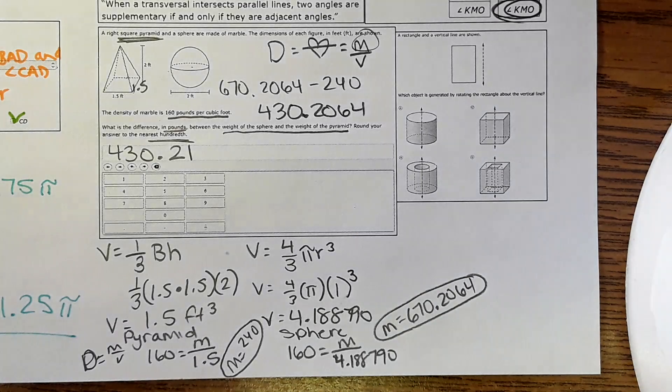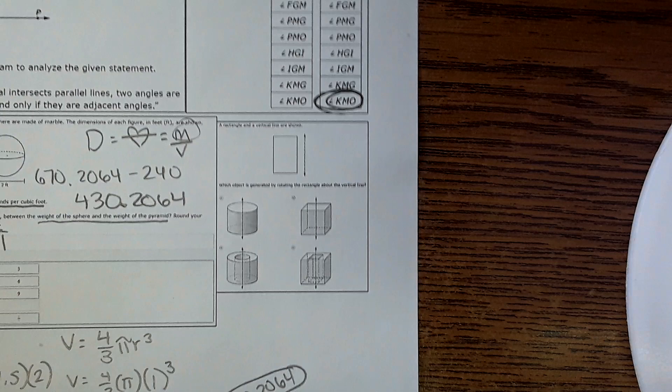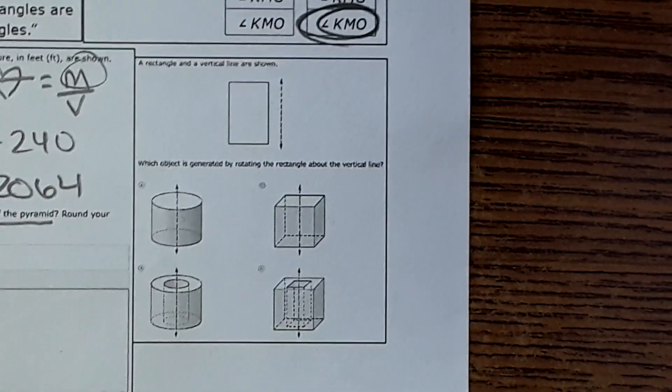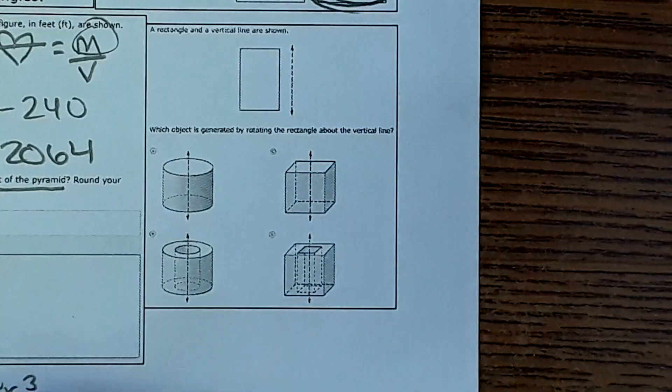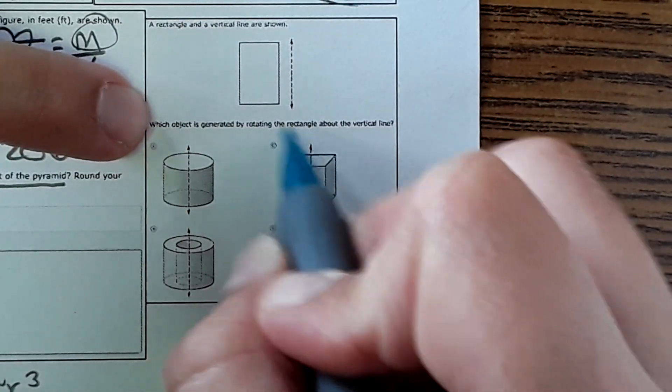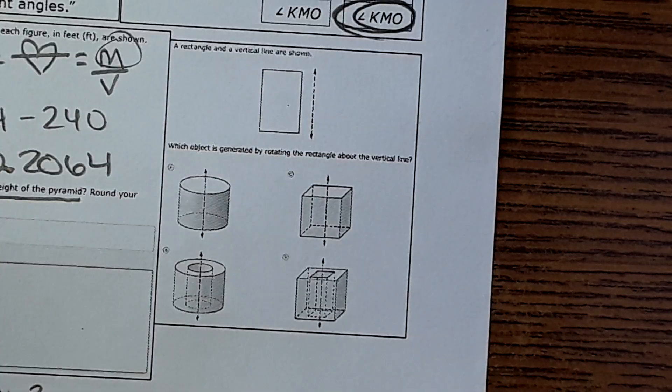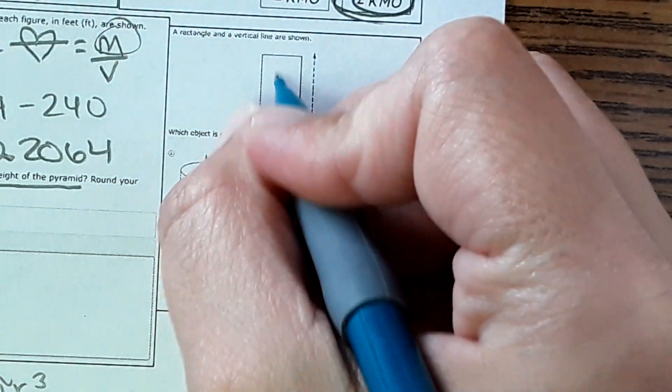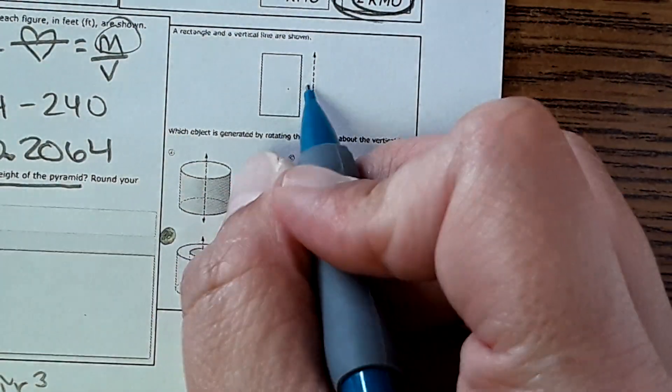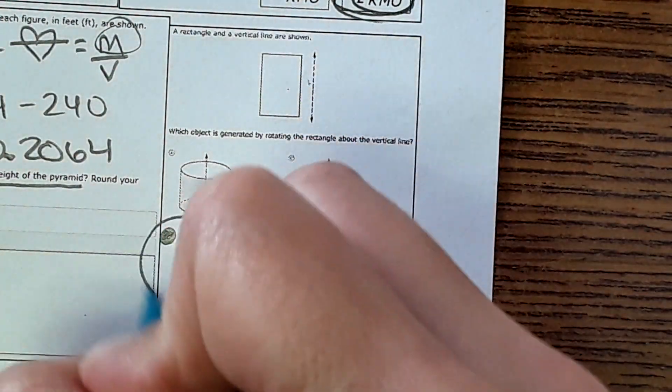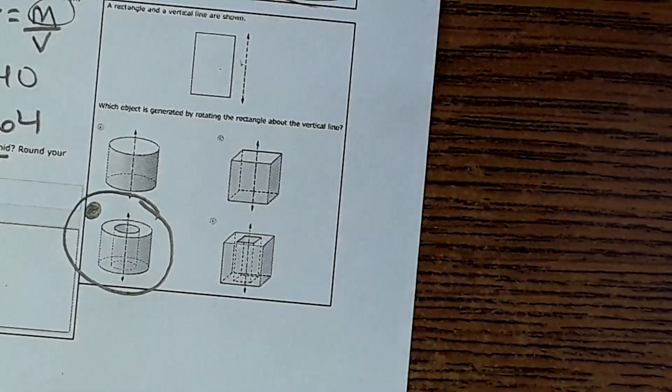Okay, next one is an easy one. It says a rectangle and a vertical line are shown. What object is generated by rotating this rectangle about the vertical line? So if you were to rotate this rectangle around the line, which one do you think it would be? Here, I'm going to pause it. Let's see, if you were to rotate this around the line, it would create this and it would have like a hollow center, so it's this one.